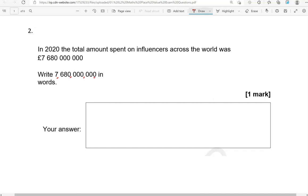Where we've got units, tens, hundreds, we've got the thousands, we've got the millions, and then the billions. So this is seven billion, six hundred and eighty million.